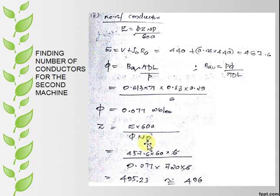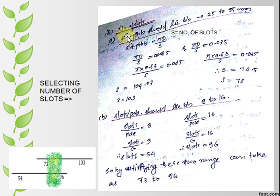Then we have to find the number of slots. This is the main objective of this video. When finding number of slots, take the first consideration: slot pitch should lie between 25 to 35 millimeter. Slot pitch is πD by S, where S is the number of slots. Giving πD by S as 25 and 35, we will get S as 103 and 73, that is the range of S.